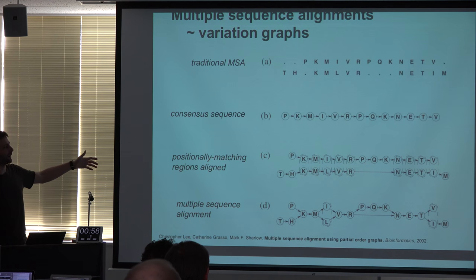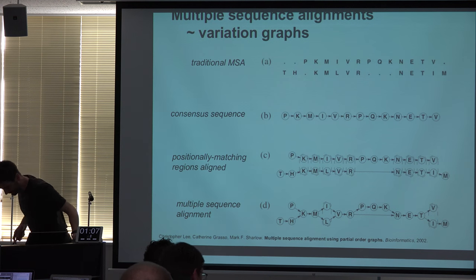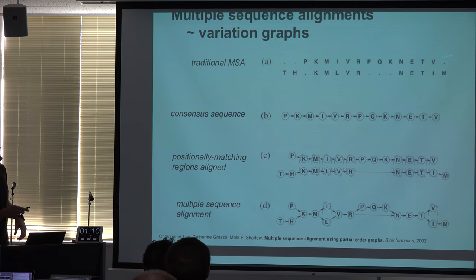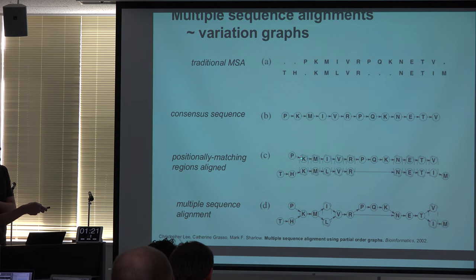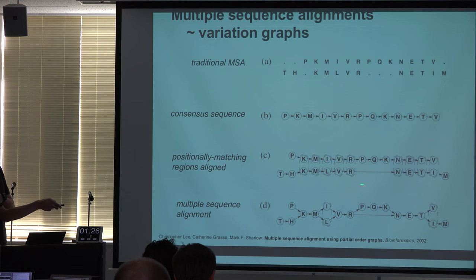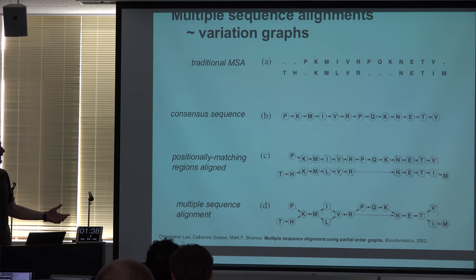A multiple sequence alignment is a particular class of this. If you had an MSA with two protein sequences, you can make a consensus by picking which one to choose at each position, and then you can imagine compressing this so that you have an alignment where there are parts that match positionally, some mismatches, and some gaps or effective insertions. This single-base version is exactly the same concept, from a paper in 2002.